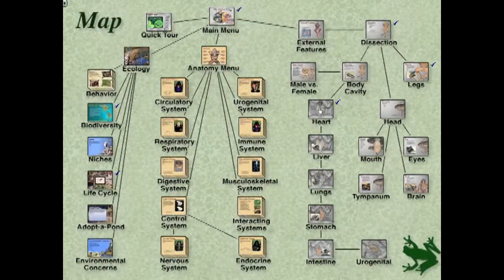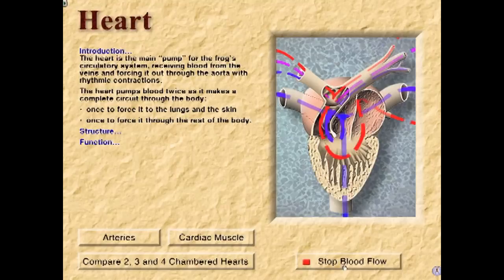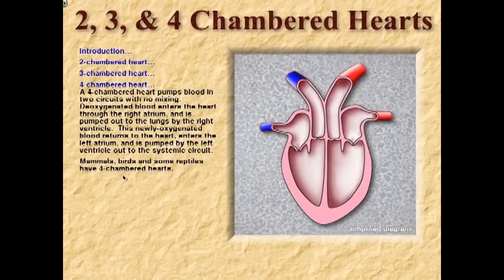Let's learn more about the frog heart. Here's a diagram of the frog heart with all the major chambers and vessels labeled — here's the right atrium, left atrium, and the single ventricle. If we start the flow of blood, we can see that deoxygenated blood moves into the right atrium and oxygenated blood moves into the left atrium. They both pour into the single ventricle, which then outflows through the conus arteriosus. For comparison, we can take a look at a four-chambered heart — here's a diagram of a human heart with four chambers.